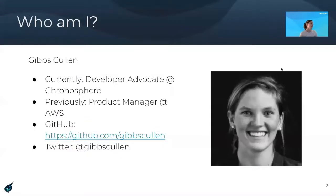A little bit about myself before we get started. My name is Gibbs Cullen. I am currently a developer advocate at Chronosphere, where we provide a hosted metric monitoring solution built on top of M3. Before Chronosphere, I was a product manager at Amazon and AWS for a few years. I've also included my GitHub and Twitter handles here in case you want to connect.